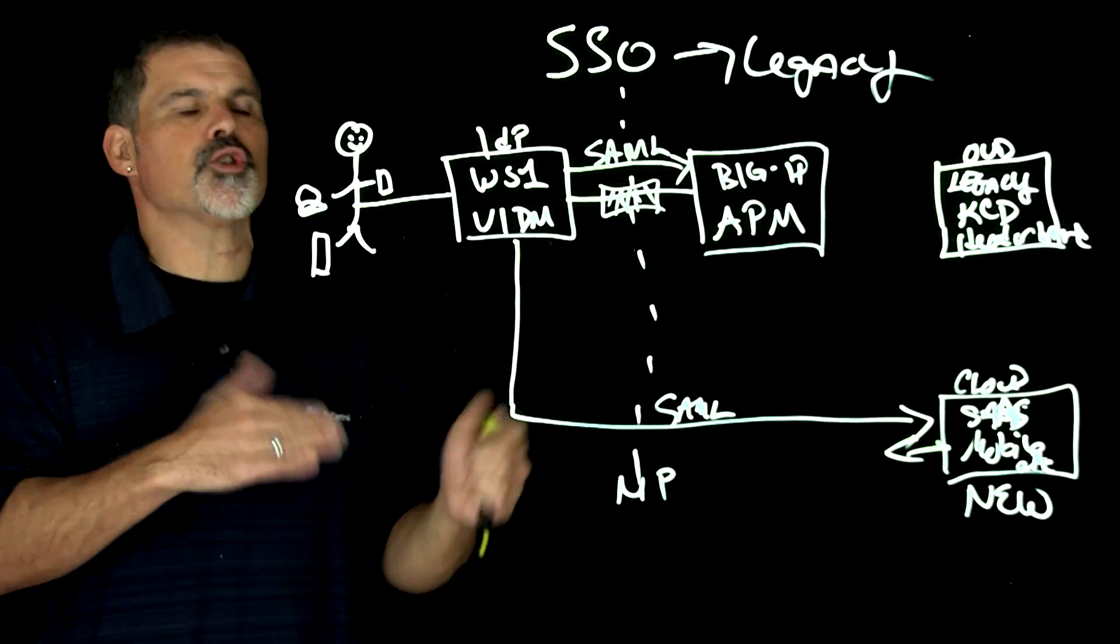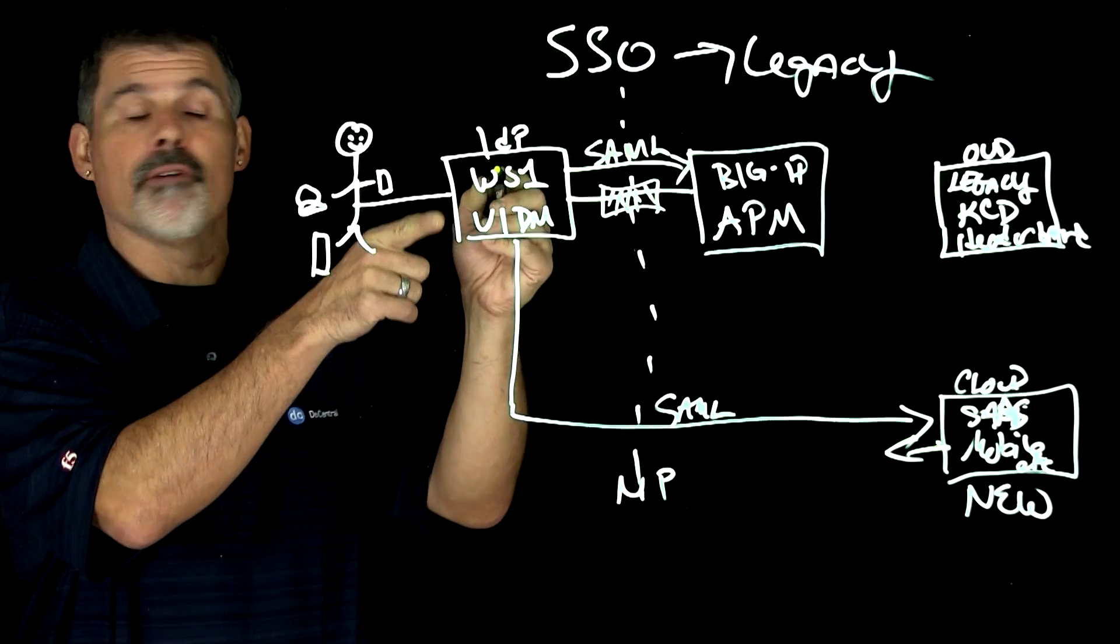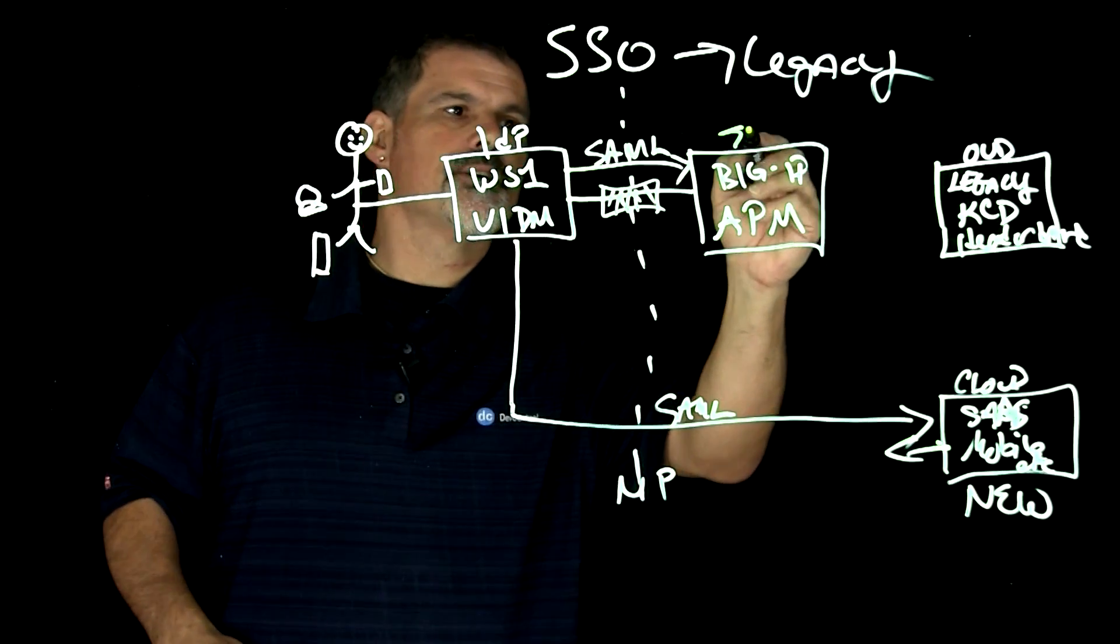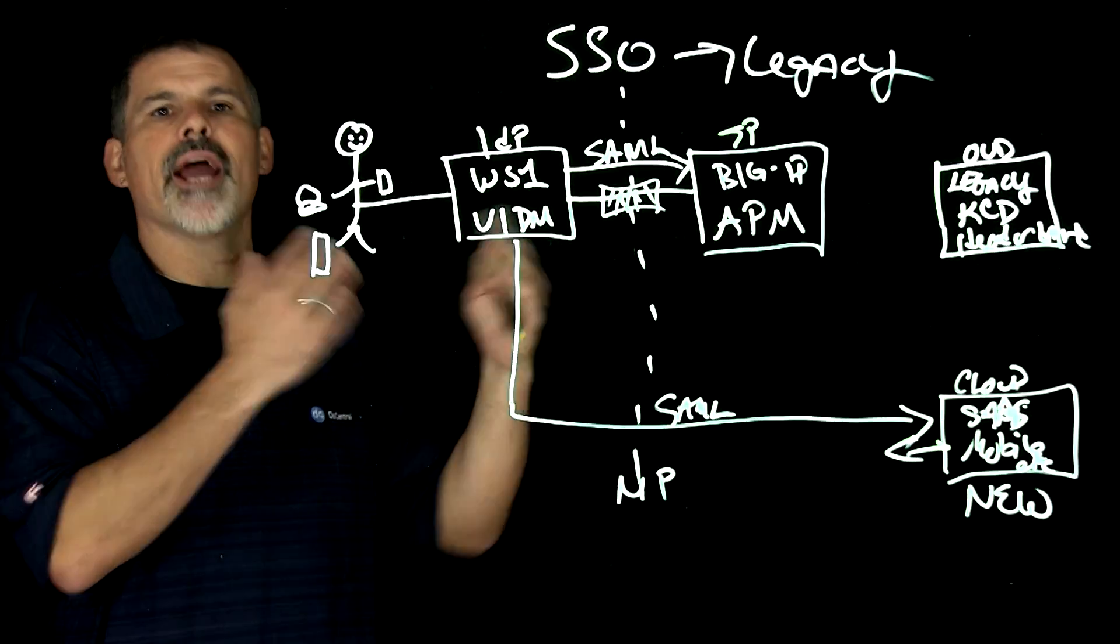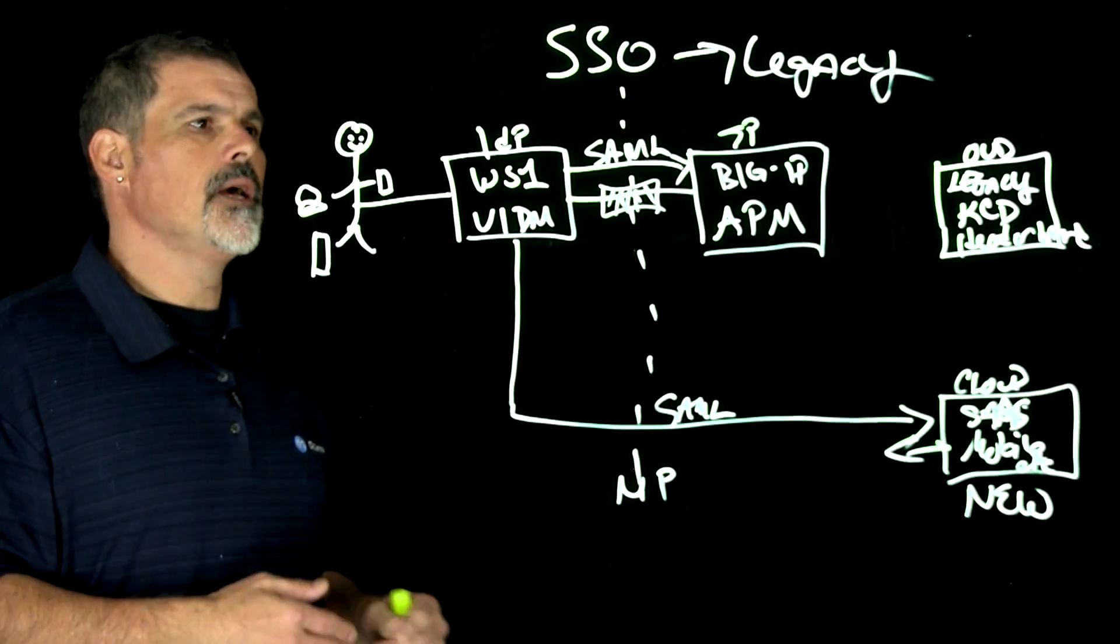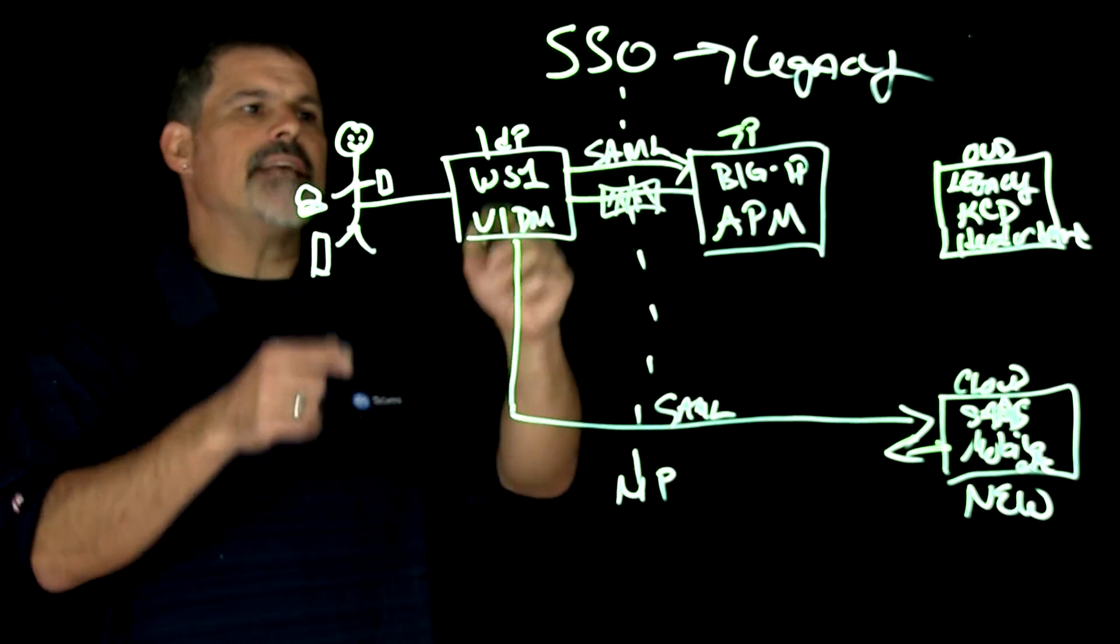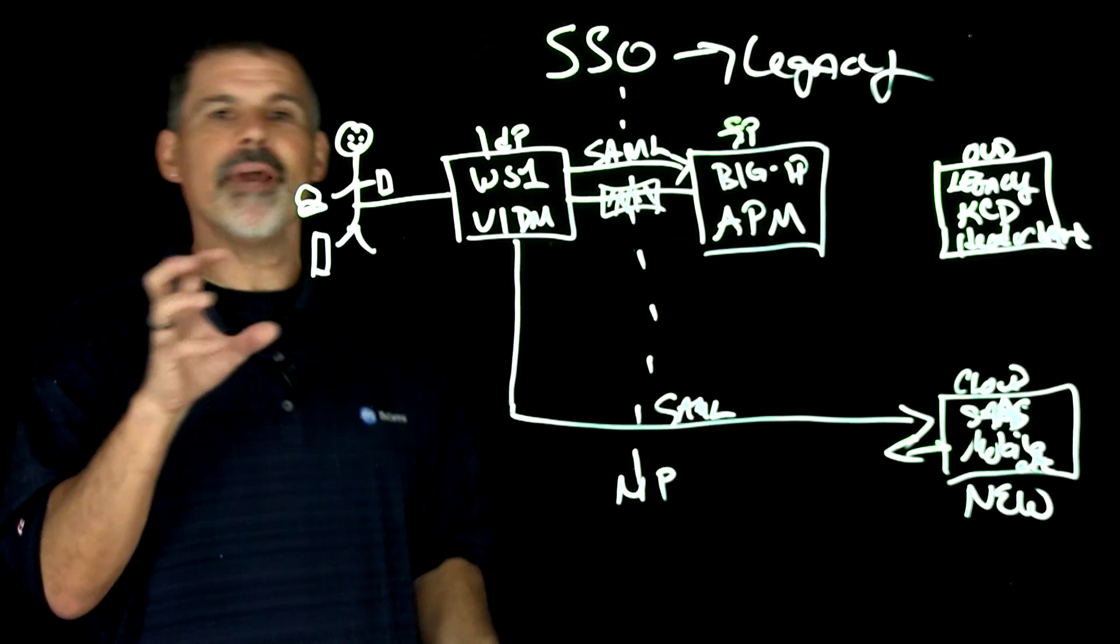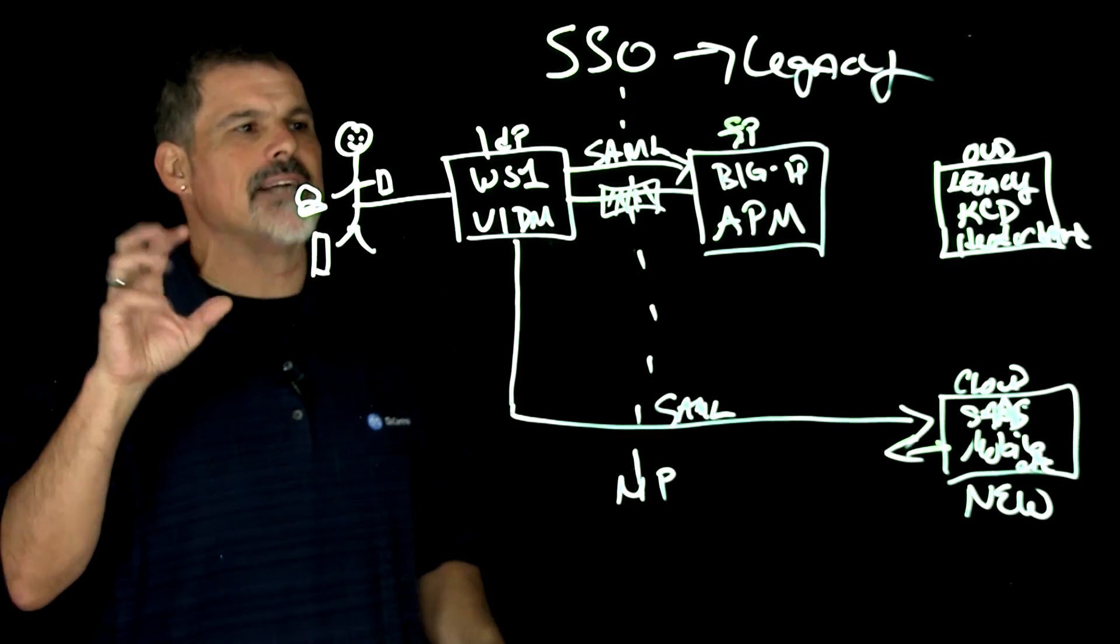Now in any SAML transaction, you have your identity provider, the voucher, and then your service provider, the location where the services, the applications, the resources live. And so it sends the SAML assertion over to big IP APM. Now big IP, this is the cool part, this is where the magic happens.